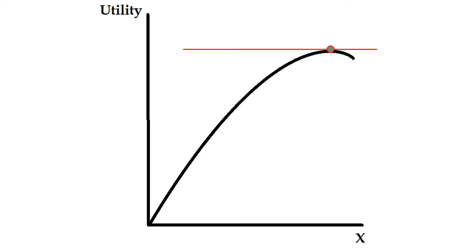Where the first derivative equals zero, we call this our first order condition. We know this is a maximum given our function, but we can also confirm that from the second derivative. We want to prove that the function has a maximum at this zero point, because we could have a slope where the curve trends downward, bends back up, and the derivative could still be zero — that would be a minimum, not a maximum.